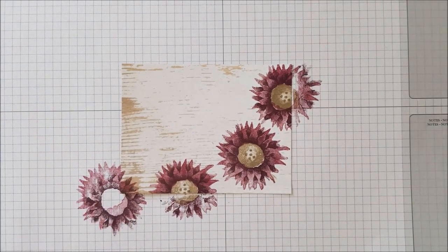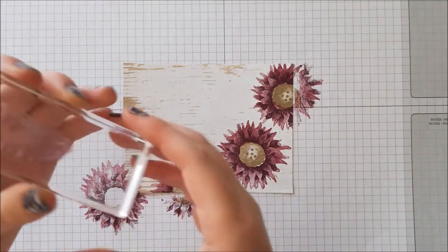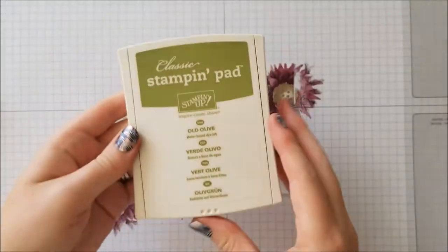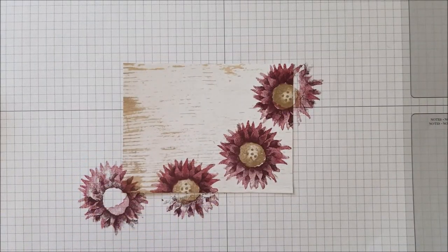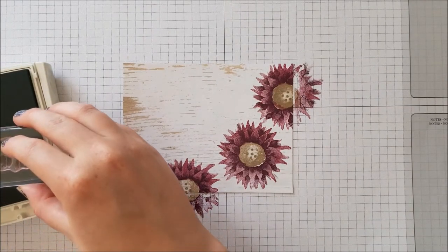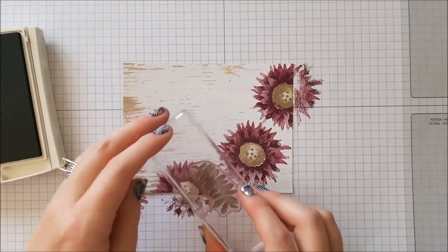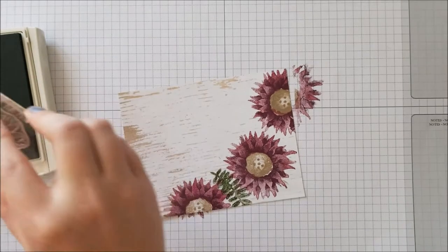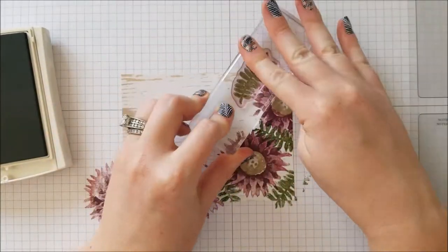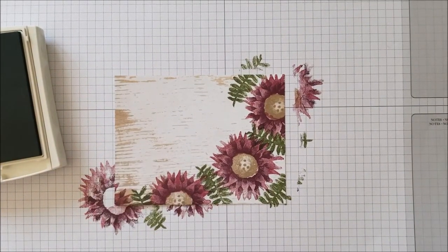So now we can move on to adding the accent pieces of the leaves. This is the piece that I used for the leaf, and we're going to use Old Olive. We're just going to ink up and we're just going to fill in some of the blank spots. So you're just going to randomly place this throughout your card.